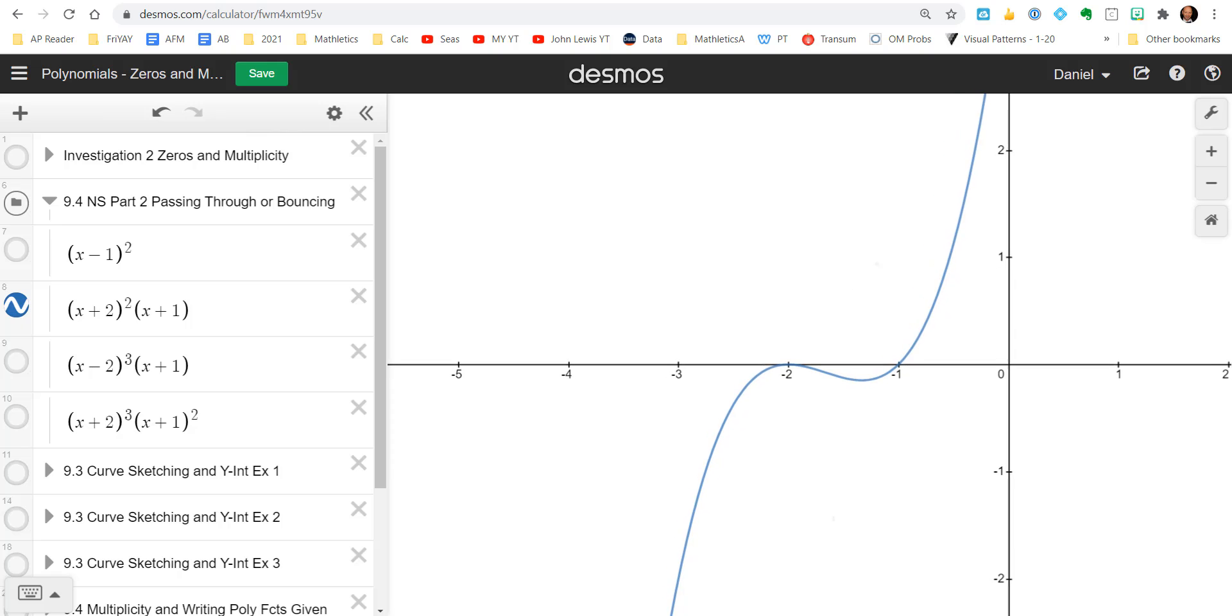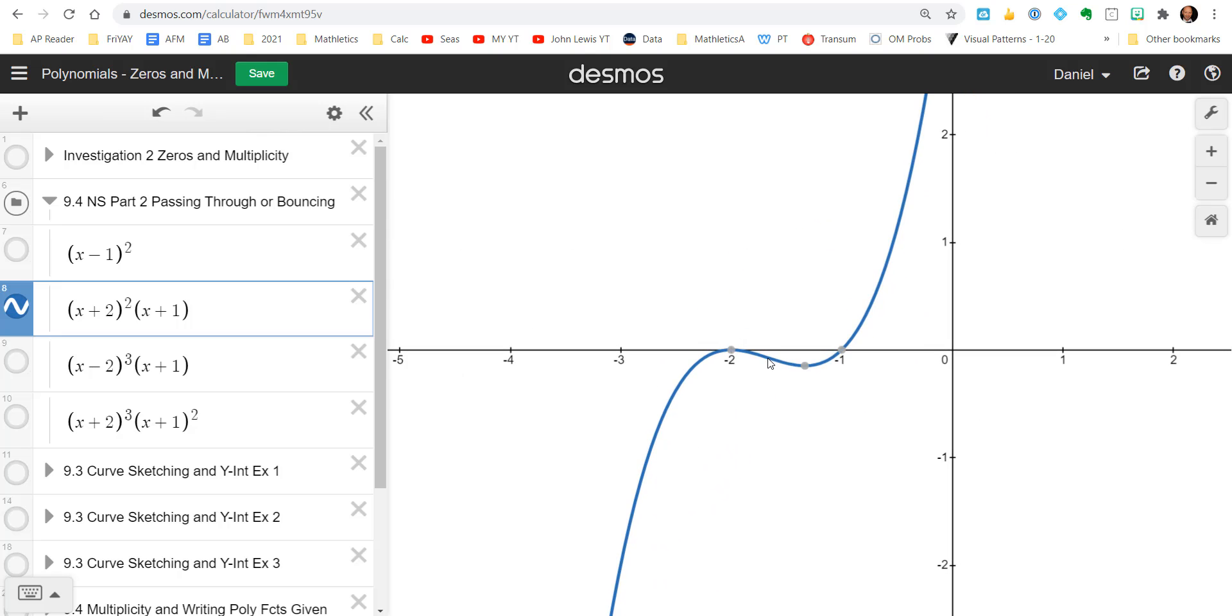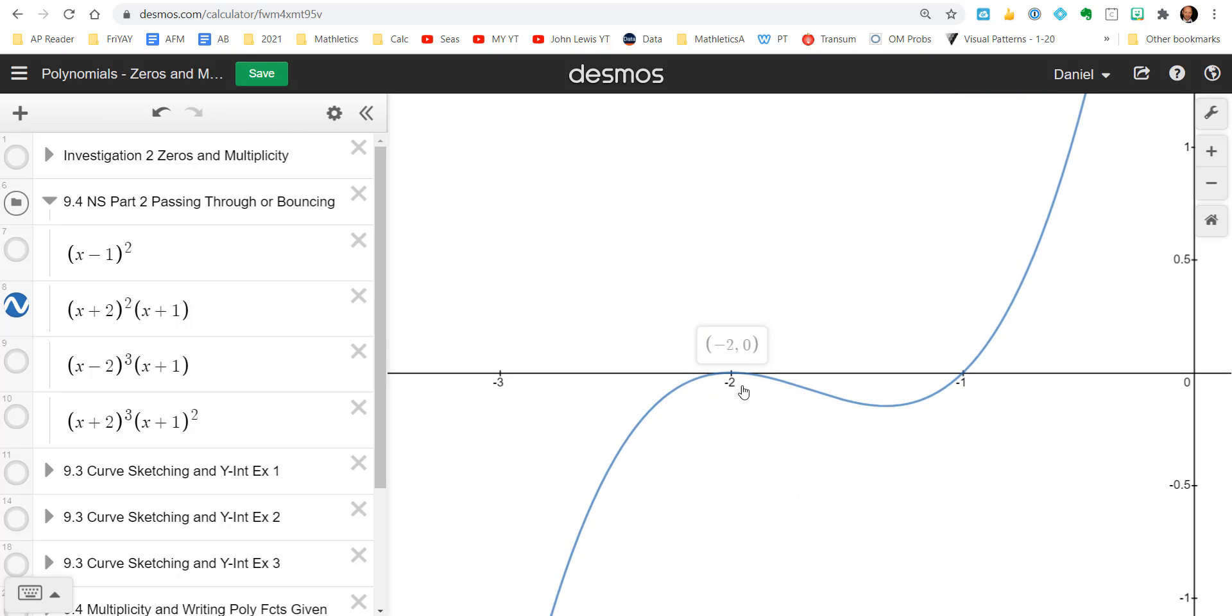All right. So let's see here. Let's see what we got. So here's our function here. Oh, come on, Desmos. There we go. So here's our function. Look at negative two. It doesn't go above negative two. So right there at negative two, it'll bounce. And then over here at negative one, it goes through.